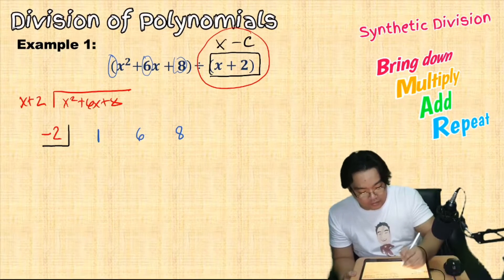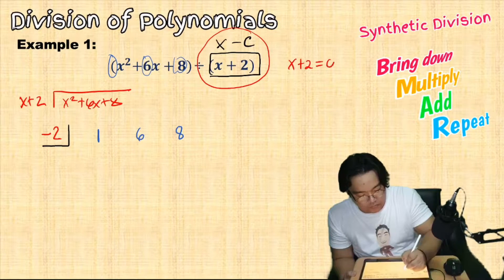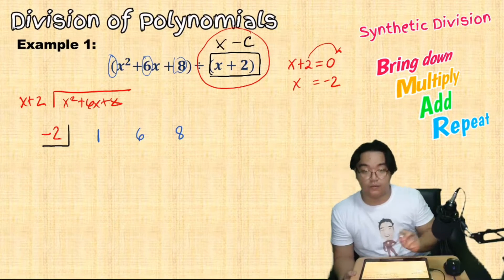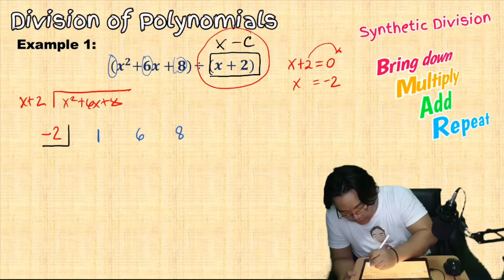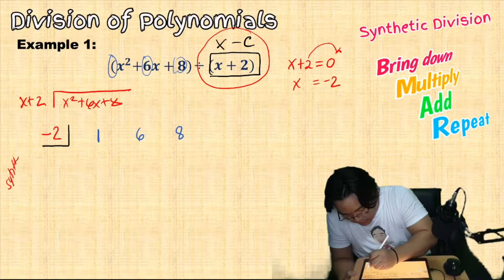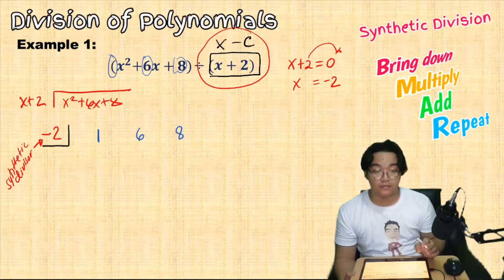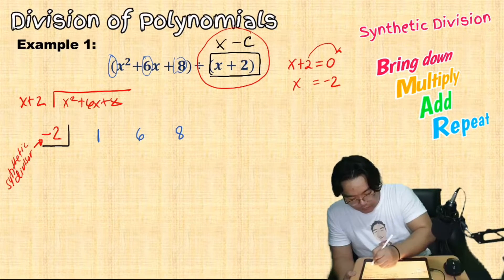To find C, we make the divisor equal to zero: x plus 2 equals 0, so x equals negative 2. Therefore our synthetic divisor — which is the C value in the divisor x minus C — is negative 2.